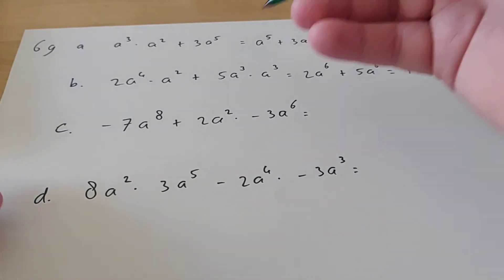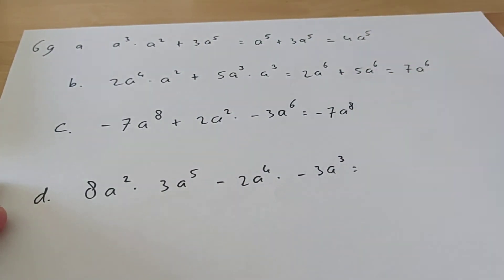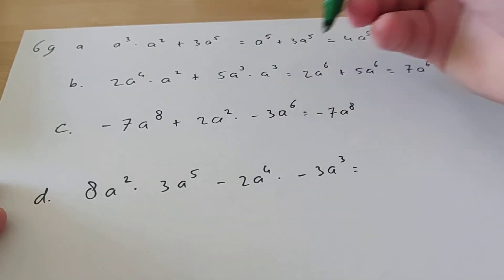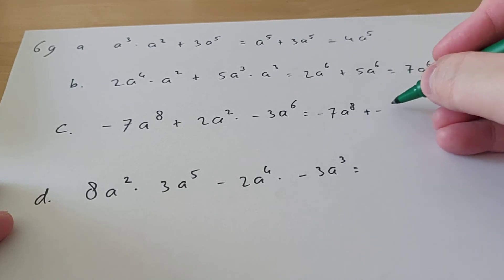Moving on to the next one, we see times here, so we have to do that first. So I'm going to copy minus 7a^8, and then we're going to calculate what this is. 2 times minus 3 is minus 6, so we have plus minus 6, so that's just minus, right?